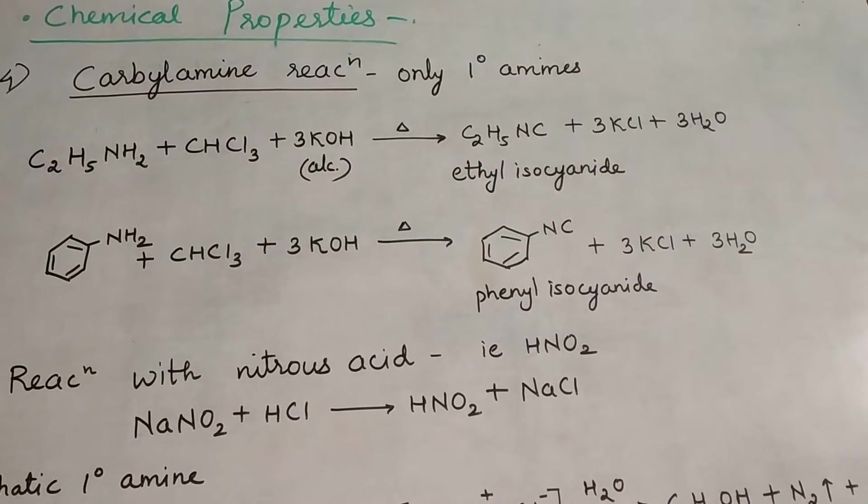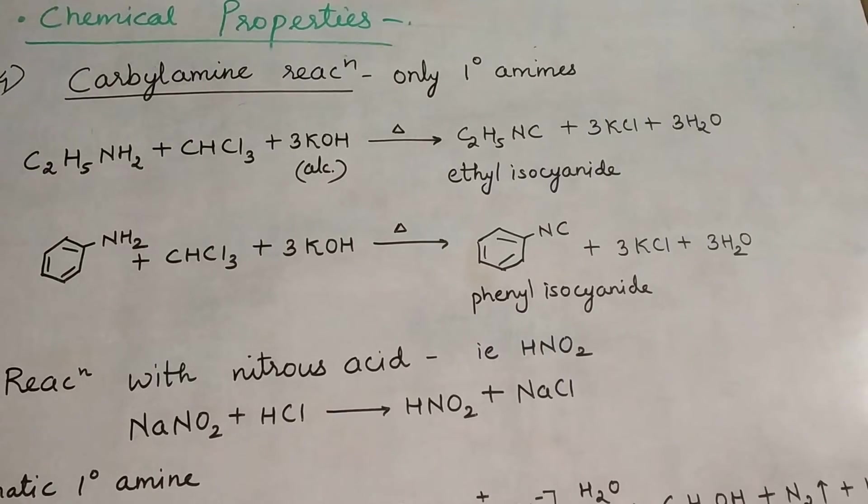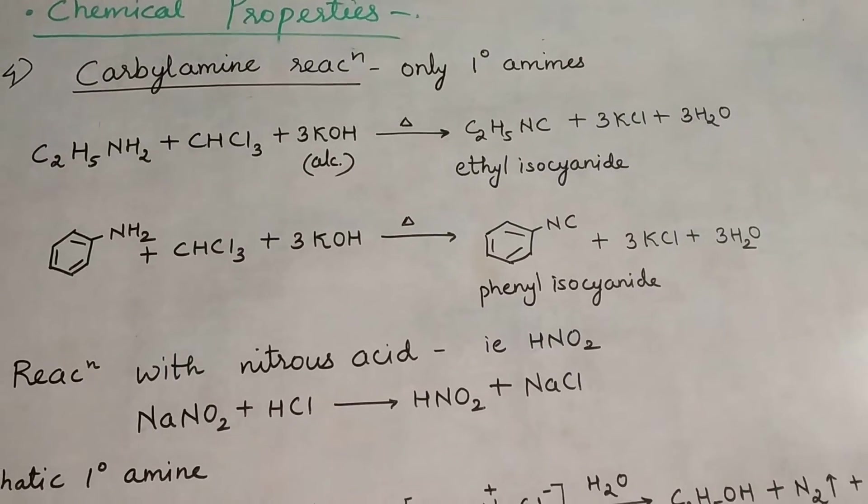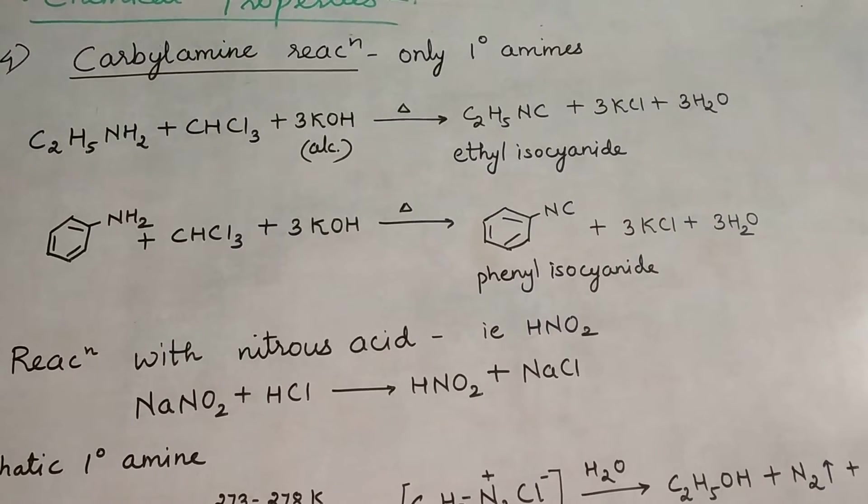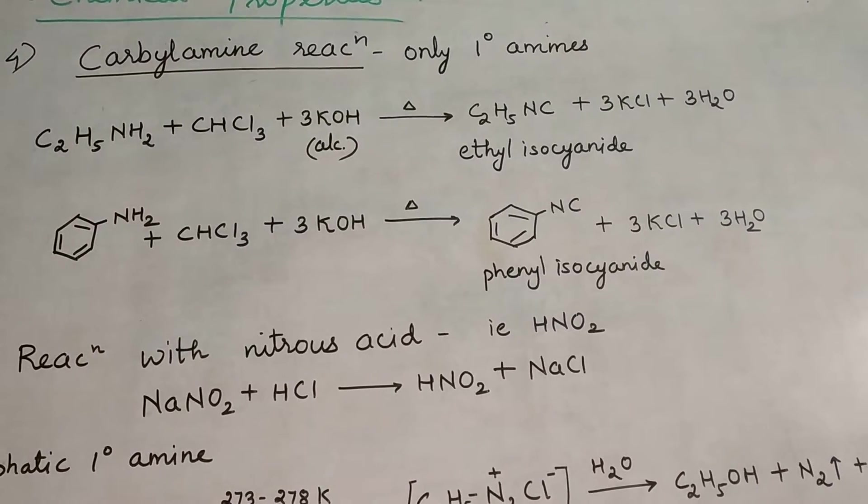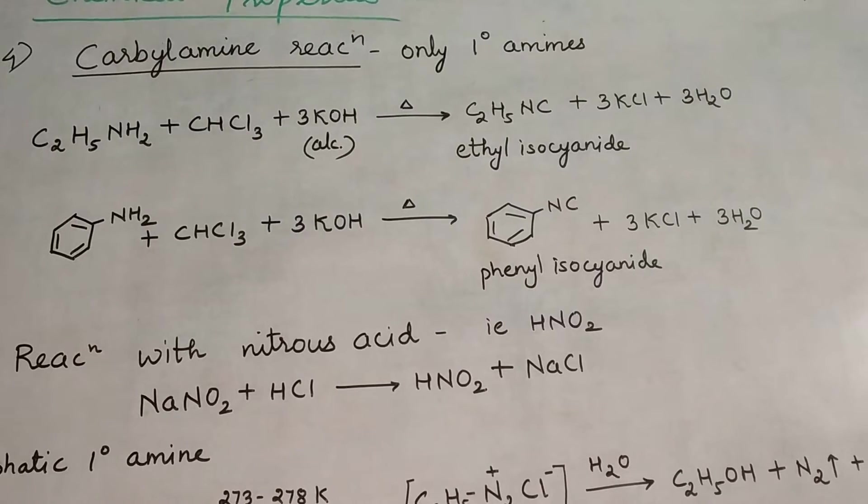Not CN—that's cyanide. This is NC bonding, called isocyanide. The compound formed is ethyl isocyanide, C2H5NC, along with 3KCl and 3H2O as byproducts. It's a balanced reaction.